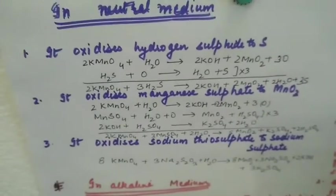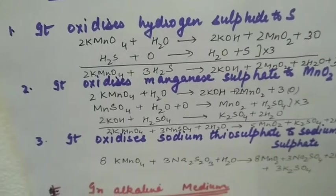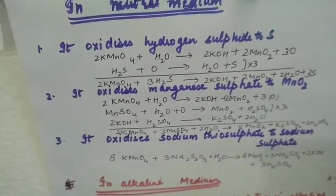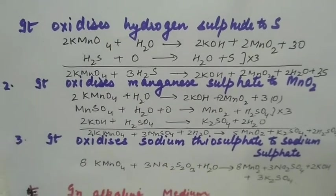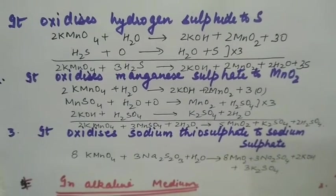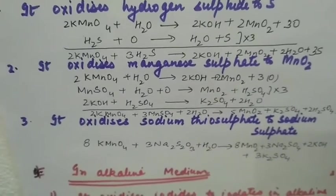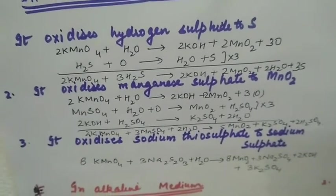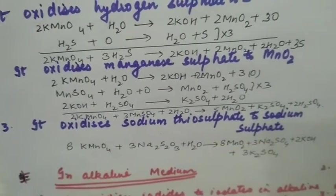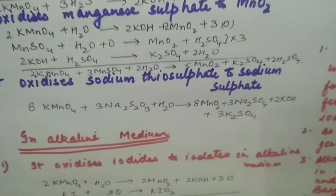In neutral medium, it will act as an oxidizing agent, but the product will be manganese dioxide. The first half reaction is 2KMnO4 plus water gives 2KOH plus 2MnO2 plus 3 nascent oxygens. In the second reaction, nascent oxygens oxidize different compounds. H2S is oxidized to sulfur, forming water. The overall reaction is obtained by adding these two half reactions. Similarly, it oxidizes manganese sulfate to manganese dioxide and sodium thiosulfate to sodium sulfate.